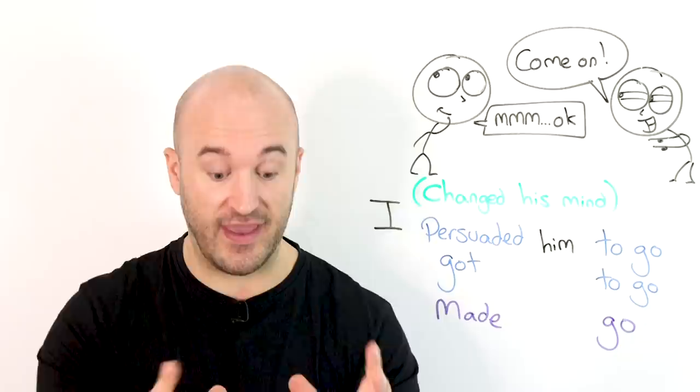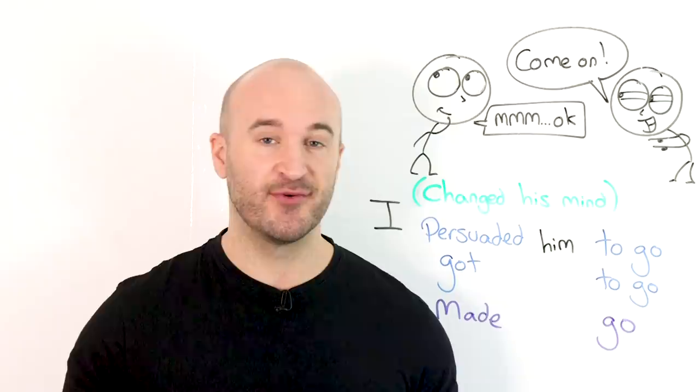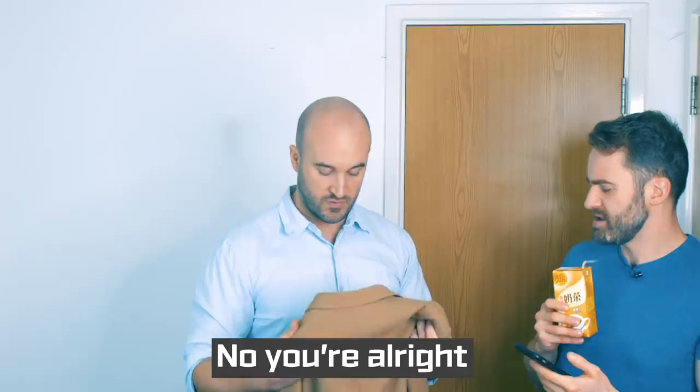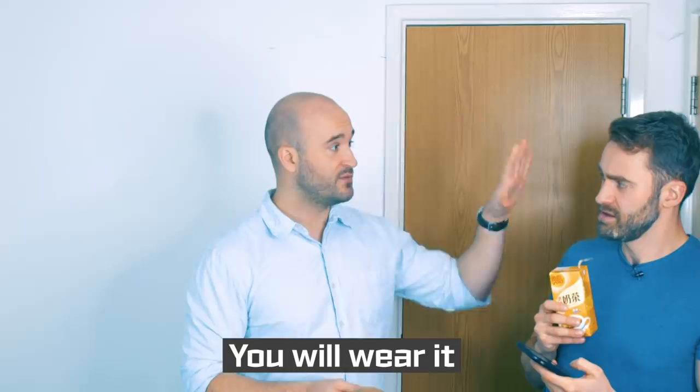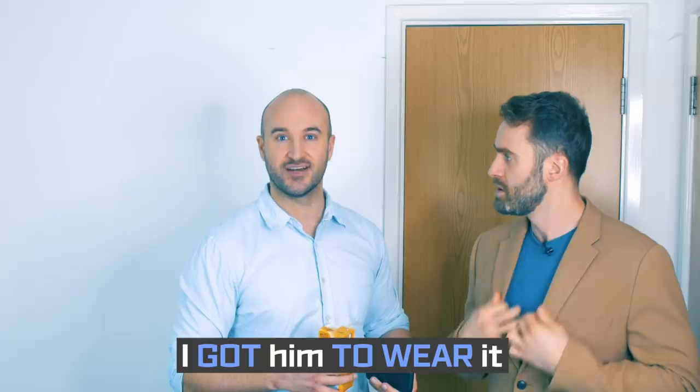But for now, here's another example with these verbs. You should wear this. No, you're right. No, I think you look really handsome in it. No, I'm okay. You will wear it. Okay, I'll wear it. I got him to wear it. I persuaded him to wear it.